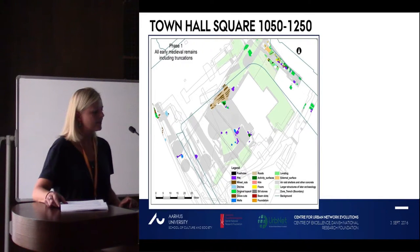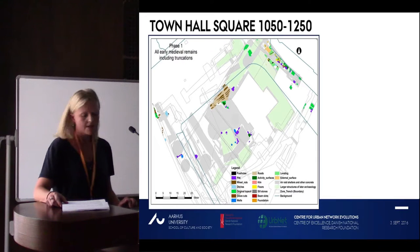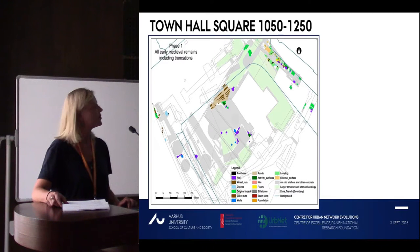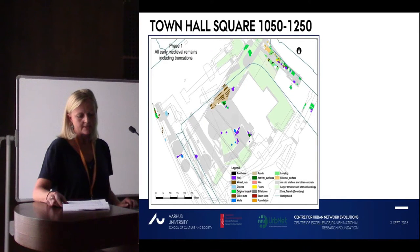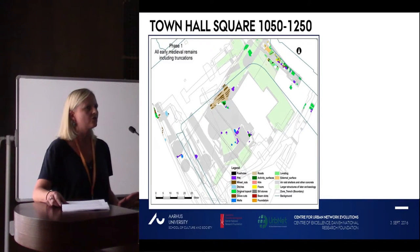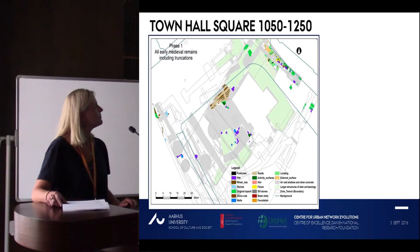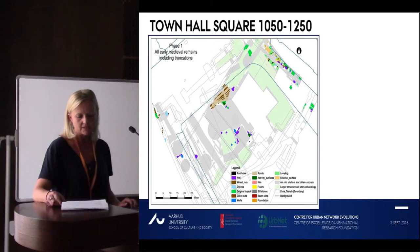This is a plan of the excavations from 2011 and 2012 from the town hall square, showing all the early medieval features until 1250. The grey and light green areas are all truncations or later archaeology which have destroyed early activities that might have been there, so the remains are rather fragmentary.